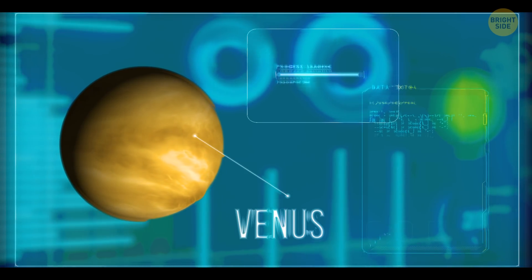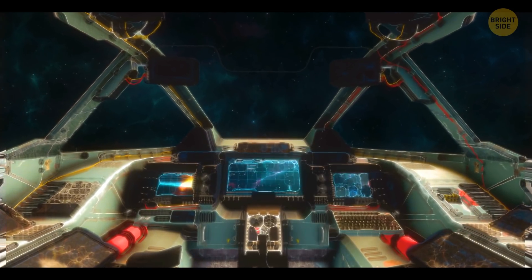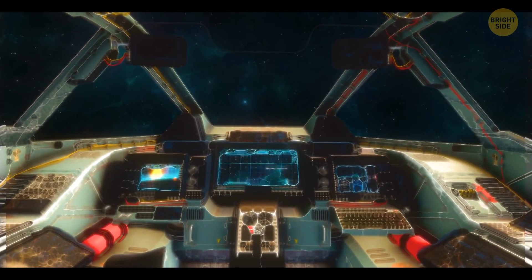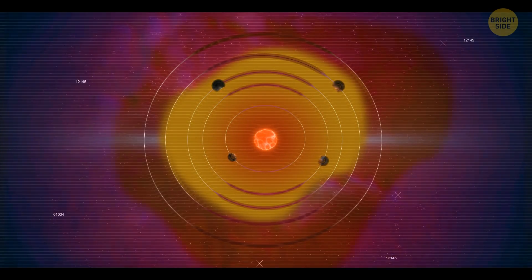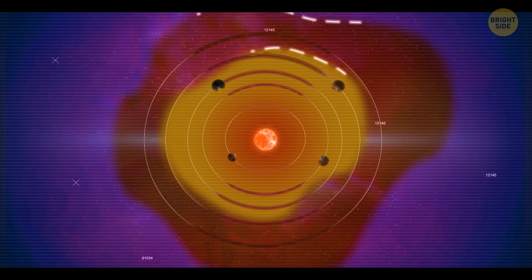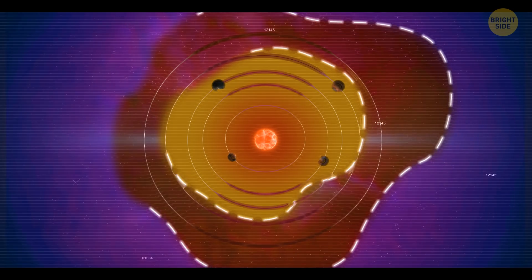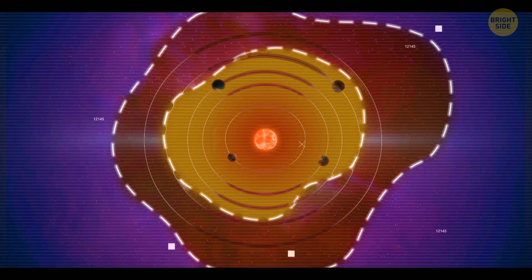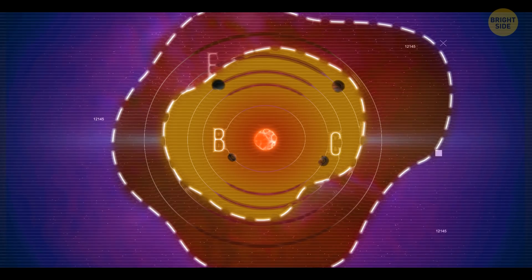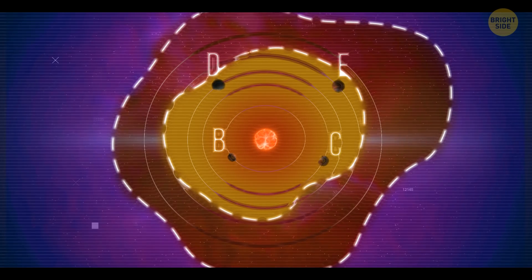So far, all the planets we've looked at are outside the habitable zone of the host star. That's the sweet spot at a perfect distance from the star. Not too close, so that the planet isn't too hot, and the water there doesn't evaporate instantly. And not too far away, so that the planet doesn't look like a cold desert. And planets B, C, D, and E are too close to the host star.